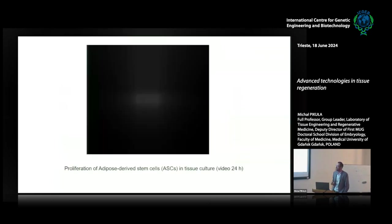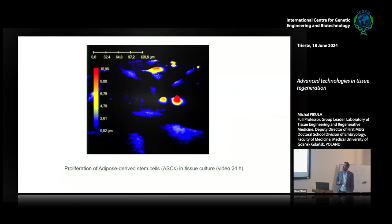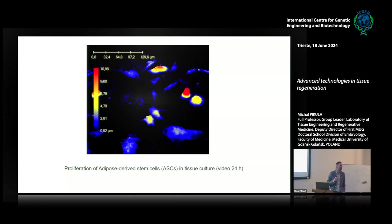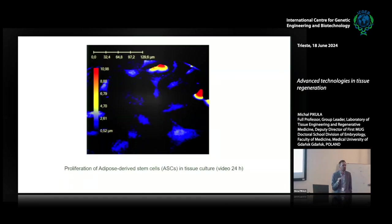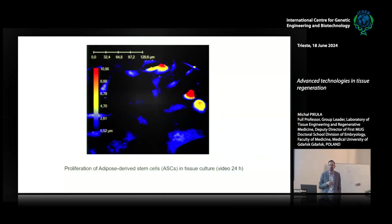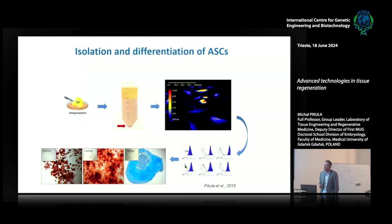Mesenchymal stem cells are said to be immunoprivileged cells, so theoretically it is possible to transplant between patients, but there is still concern about that — especially if you have a stromal vascular fraction with lymphocytes. Then you culture and expand them in vitro. The photographic microscopy shows us very nicely how cells behave and proliferate in vitro. A very good thing about these stem cells is that they proliferate very nicely. In our lab, when we culture the cells, we don't actually see a significant age-dependent effect.